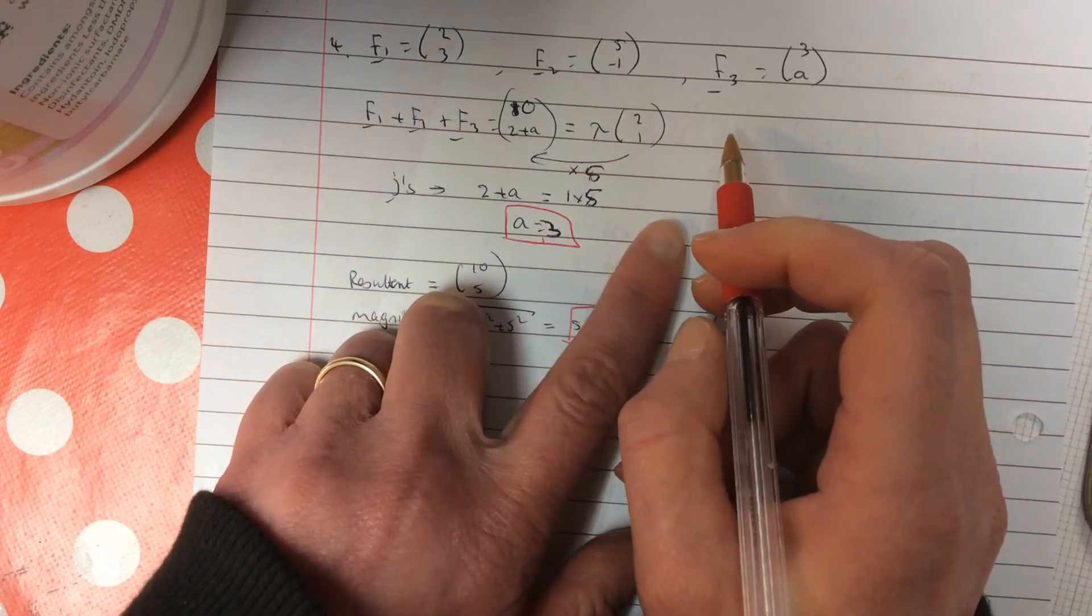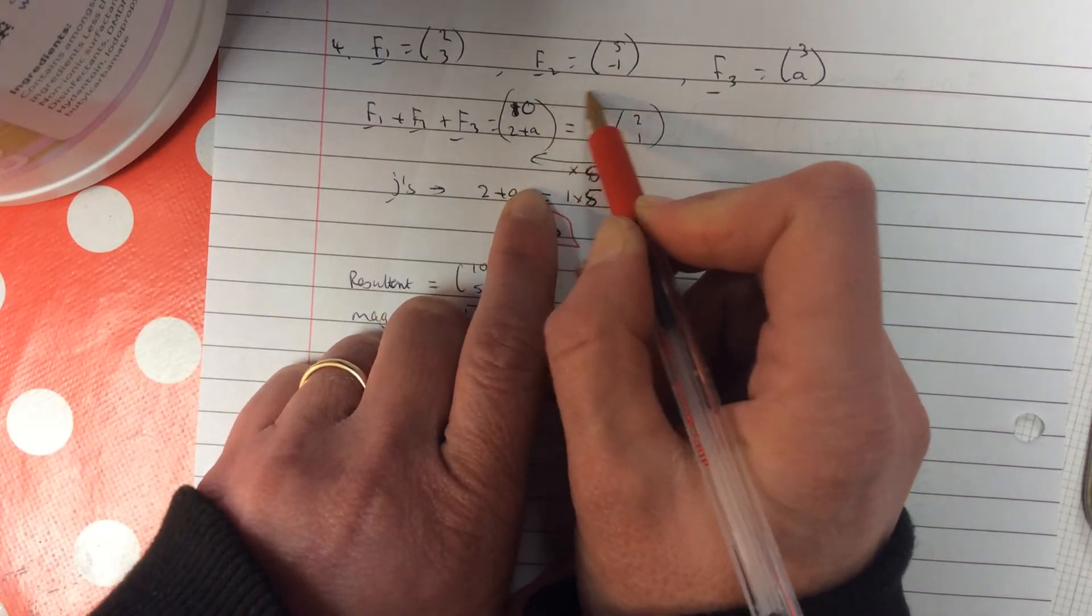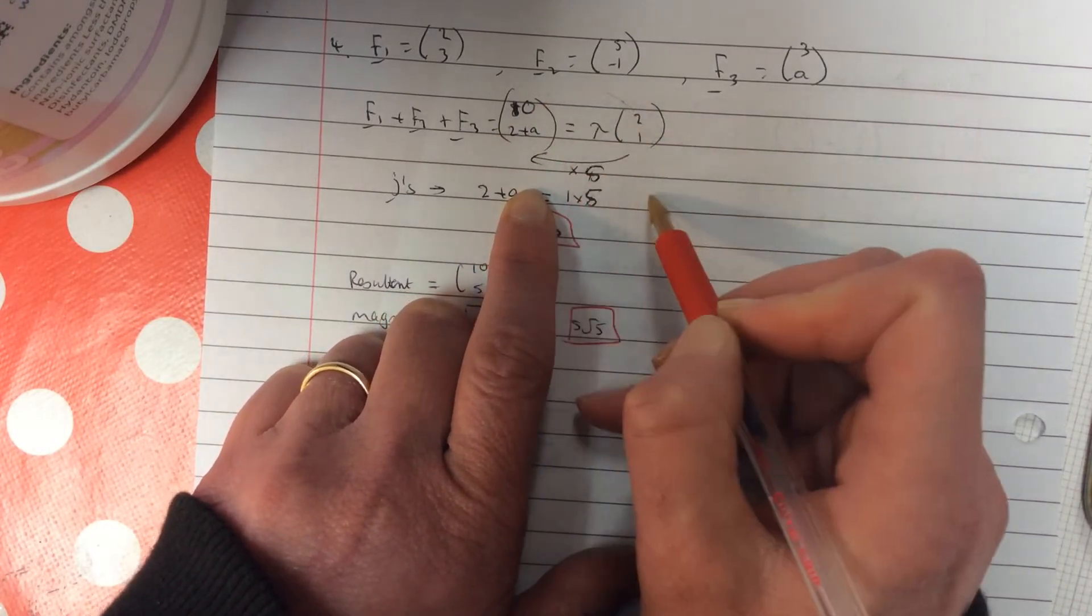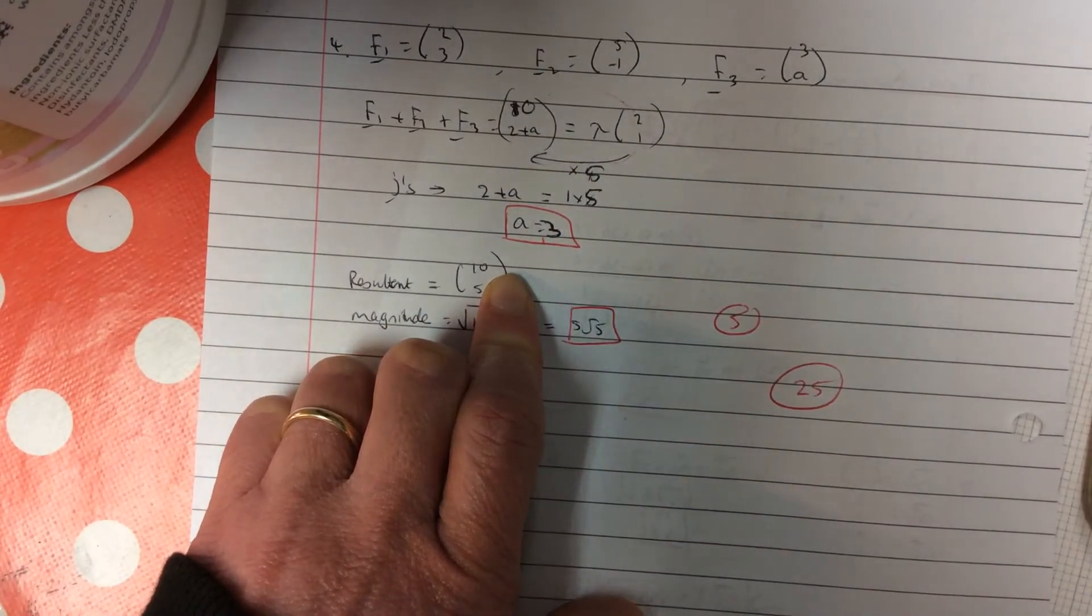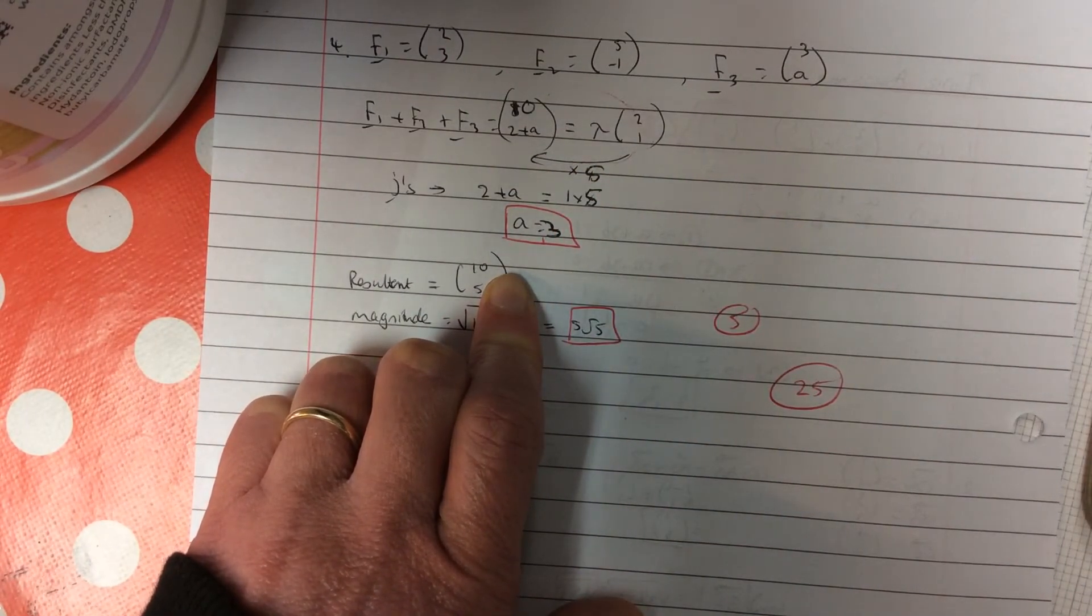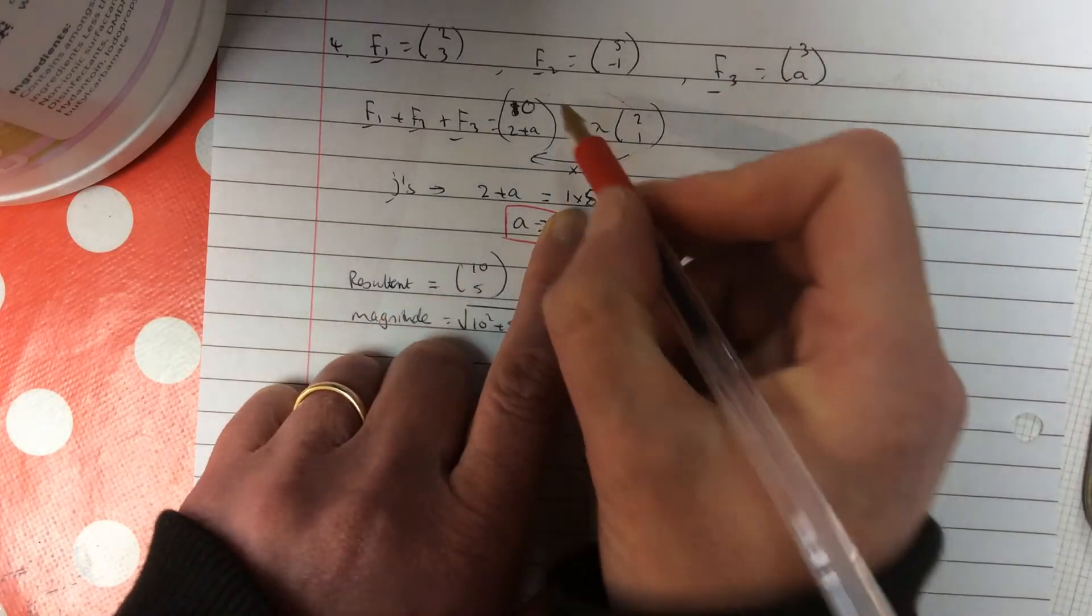So, what I'm going to do. If you look here. Look at the I's. They've been divided by 5. Or going this way. Times by 5. So, if I times this by 5 to get my J's. I will then have the 2 add A equals 5.